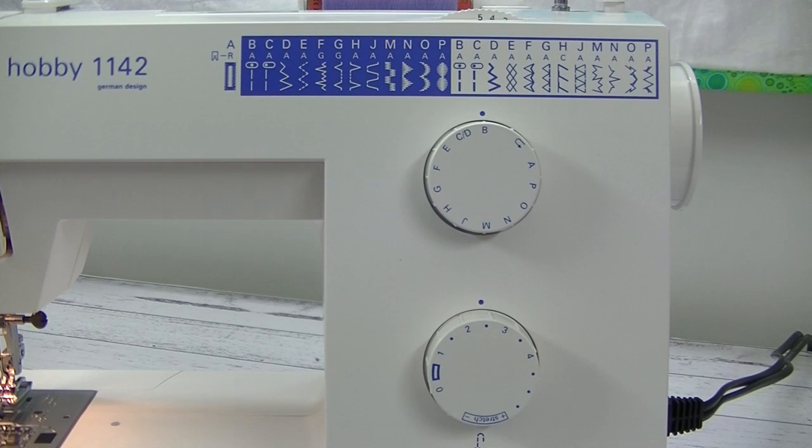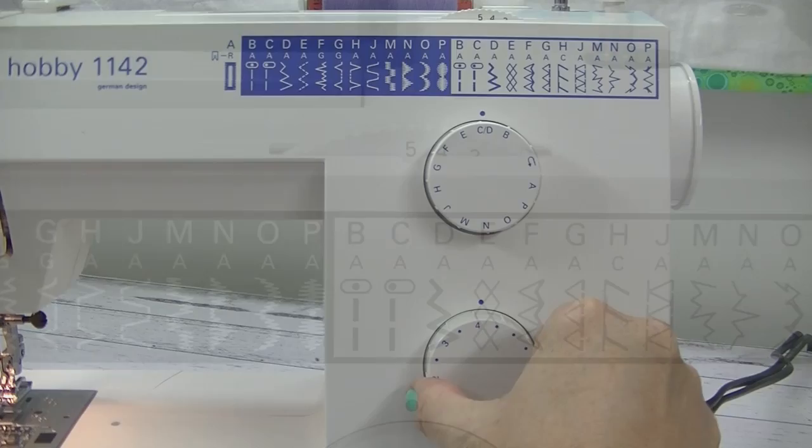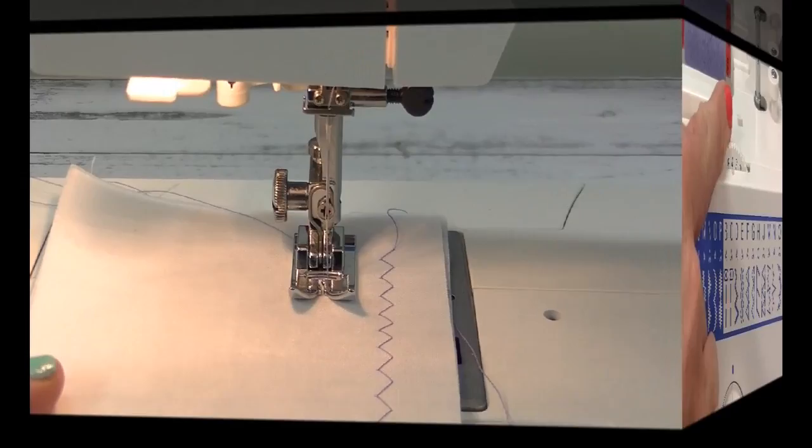To go from a straight stitch to a zigzag, we use our stitch selector dial to move to a D. Then we adjust the length of our stitch. I'm going to make this a length of four. Then we need to adjust the width of our stitch. This is the dial that's on the top of the machine. So in this case, I'm going to turn that to a four as well. You can see the zigzag on the right hand side of the foot. That's a four mil by four mil.